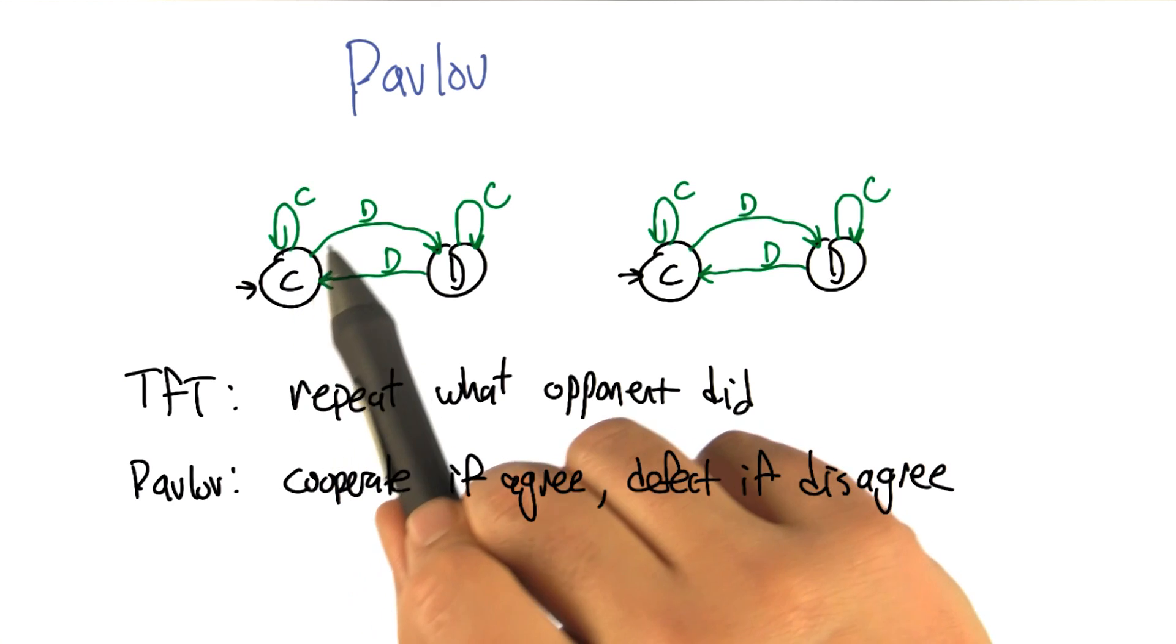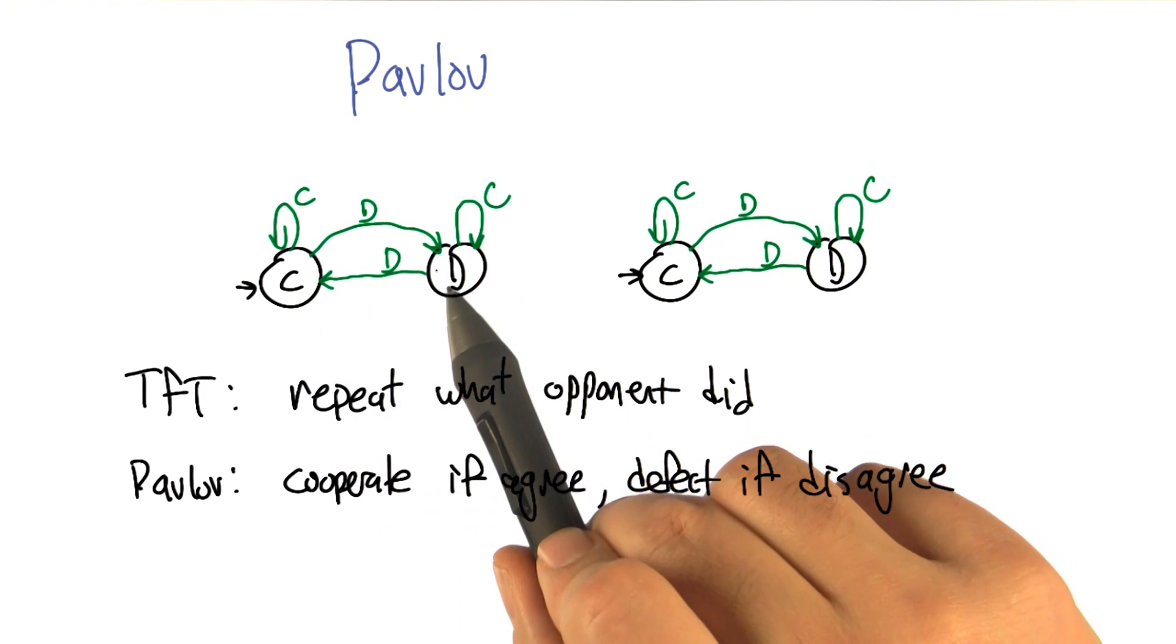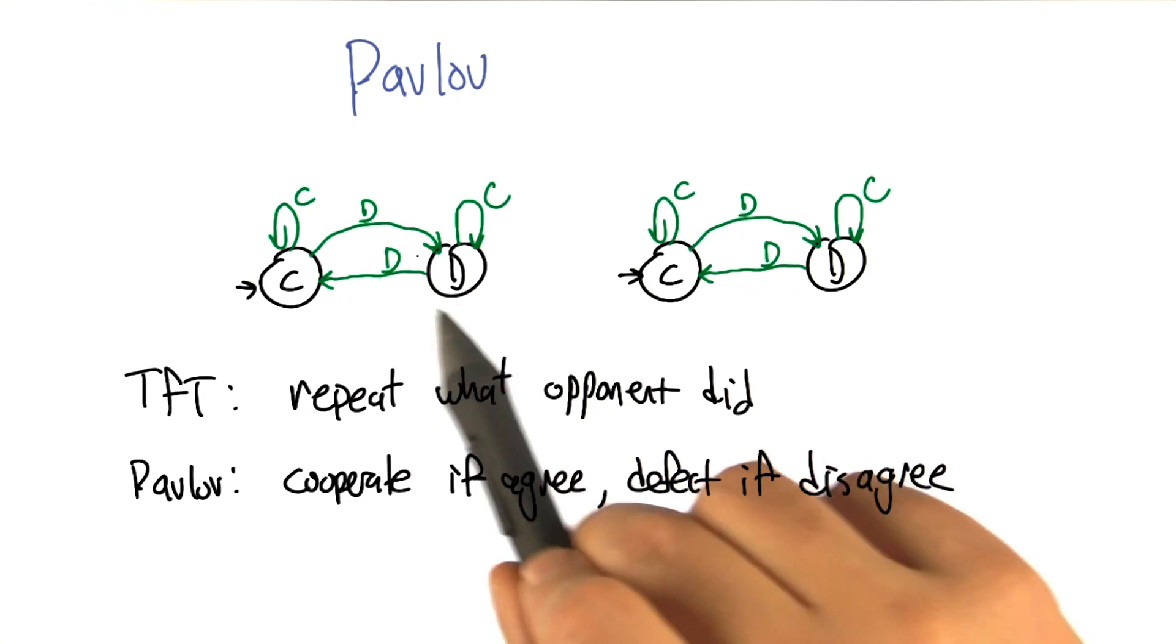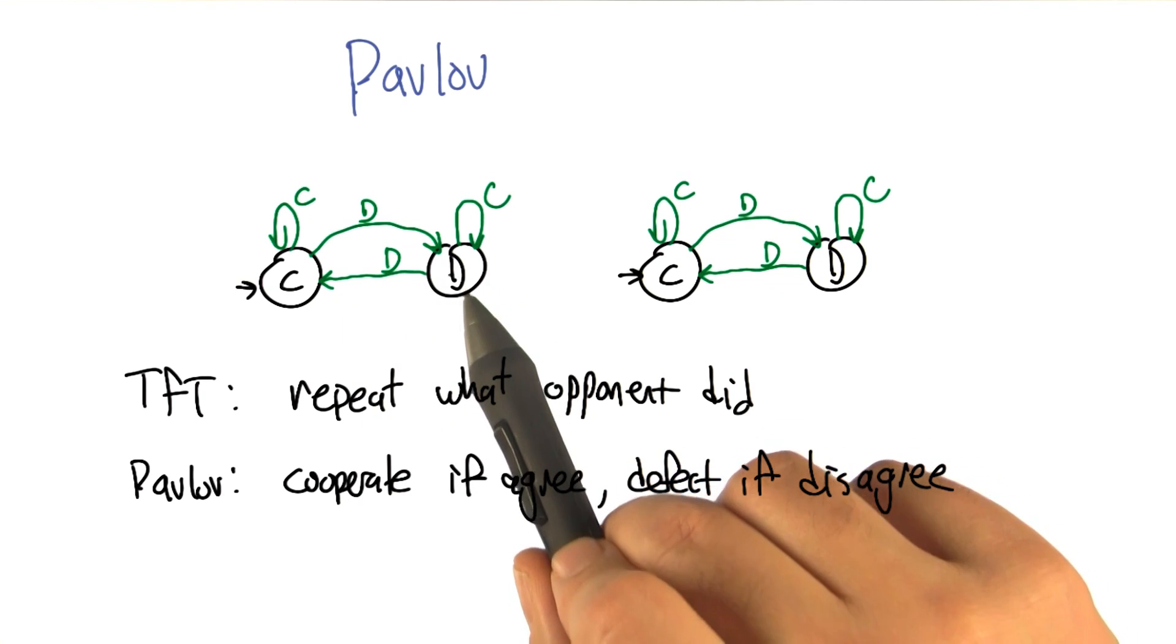If you defect, then move to the defect state. It still looks a lot like tit for tat, but this defect state has two arrows coming out of it that are reversed from what they were in tit for tat.